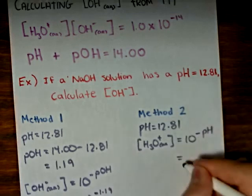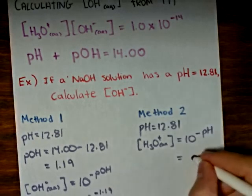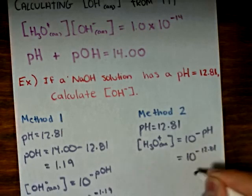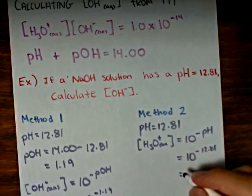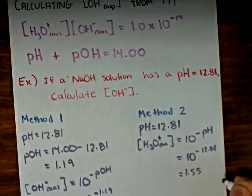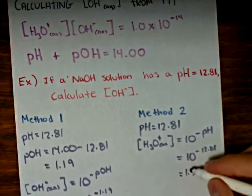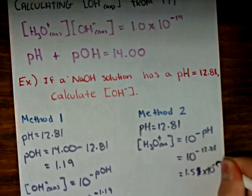In this case, that will be equal to 10 to the negative 12.81, for a hydronium ion concentration of 1.5 times 10 to the negative 13 moles per liter.